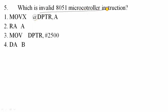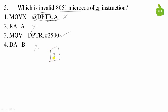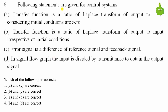Question 5: Which is an invalid 8051 microcontroller instruction? The instruction MOVX @DPTR, A is valid — for external interfacing, all operations go via the accumulator register A and DPTR. The instruction RL A is also valid. However, MOV DPTR, #immediate value — you cannot move immediate data to DPTR directly, so this is an invalid instruction. The corresponding option is option 3.